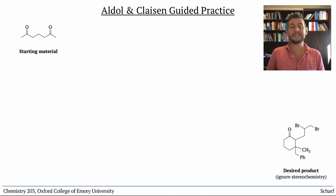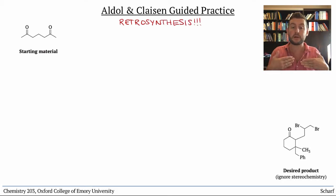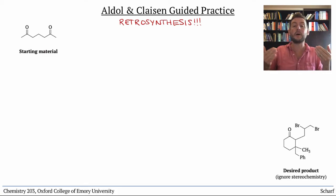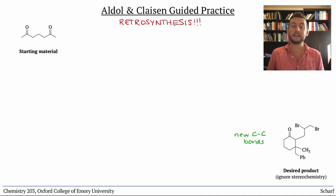Let's work through a synthesis question. When you're presented with a synthesis question, you should always try to approach it retrosynthetically, working backward from the product. Ask yourself: what could this product have been made from? The product shown here has quite a few more carbons than the starting material, so we know we're going to need to make some new carbon-carbon bonds. And there's a ring in the product, so there's going to be at least one intramolecular reaction somewhere.